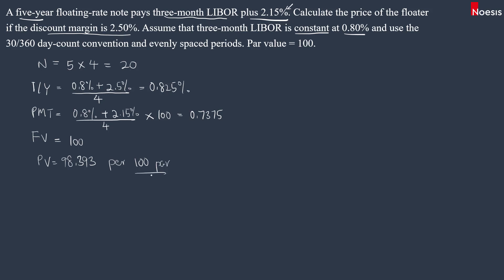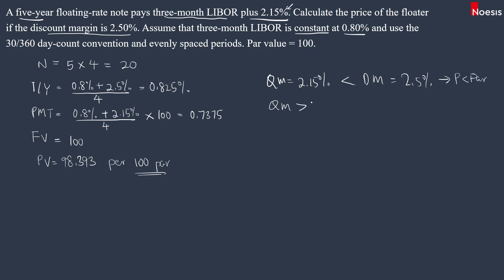Depending on the par value, we can scale accordingly. What we observe here is that when the quoted margin of 2.15% is less than the discount margin of 2.5%, the floater is priced at a discount, which is below 100 — that's why the price is below par. If the quoted margin is greater than the discount margin, then we have a premium to par. And if the quoted margin equals the discount margin, the price will be equal to par.